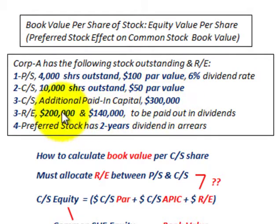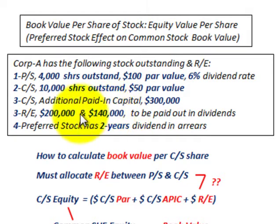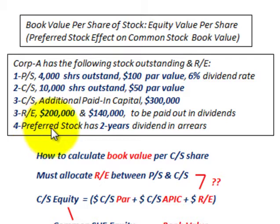In our retained earnings, we have $200,000. Of those $200,000 in retained earnings, $140,000 is going to be paid out in dividends in this example. We also have preferred stock that has 2 years of dividends in arrears that haven't been paid yet.